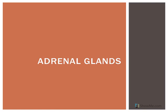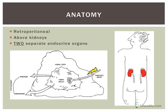This recording is going to cover the adrenal glands. The adrenal glands are found just above the kidneys. In some textbooks they'll refer to them as suprarenal glands because they're superior to the kidneys. These glands are, like the kidneys, retroperitoneal, which means they're behind the parietal peritoneum.